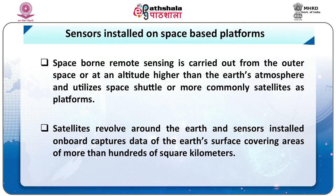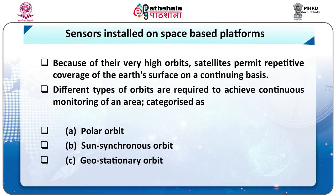Spaceborne remote sensing is carried out from outer space, at an altitude higher than the earth's atmosphere, utilizing space shuttles or more commonly satellites as platforms. Satellites are man-made objects that revolve around the earth, and sensors installed on board capture data of the earth's surface covering areas of more than hundreds of square kilometers. Because of their orbits, satellites permit repetitive coverage of the earth's surface on a continuing basis. Since the launch of the first earth resources satellite, Landsat, in 1972, satellite-based remote sensing has continuously served the betterment of science and technology.